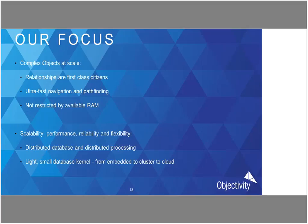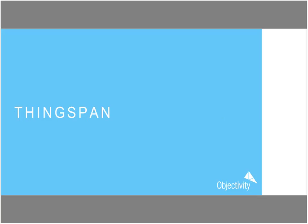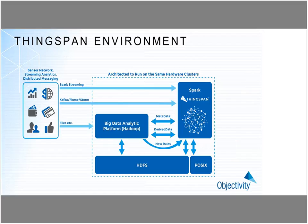That's where we come in. We are dealing with complex objects where relationships are first-class citizens, and we specialize in ultra-fast navigation and pathfinding. We're not limited by the amount of RAM — many dedicated boxes out there rely on RAM, we don't. Because we're a distributed database with distributed processing, we scale and perform very well. ThingSpan fits into this open environment and provides the metadata store and the very fast pathfinding and navigational access.